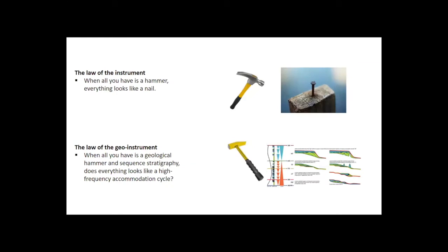This can be put simply through the law of the instrument: when all you have is a hammer, everything looks like a nail. The tool you have influences what you see and what you can do. Extended into geology, the law of the geo-instrument says that when all you have is a geological hammer and sequence stratigraphy — and it could be any kind of conceptual model — everything you see is going to look like a high-frequency accommodation cycle, because that's what the model tells you is there. So it has an influence on everything we do. The question becomes: how do we break away from that influence? How do we break that potential circular logic?